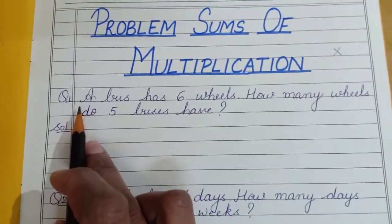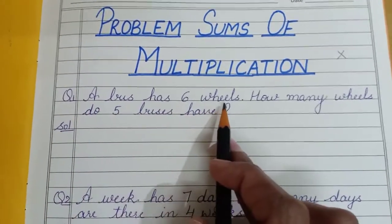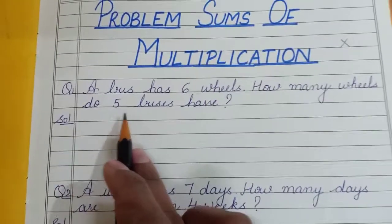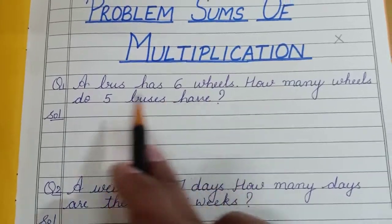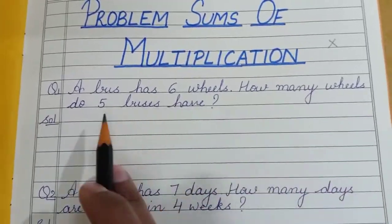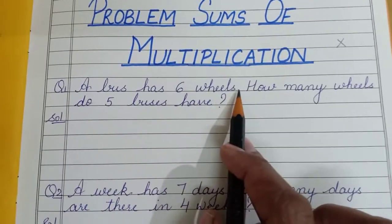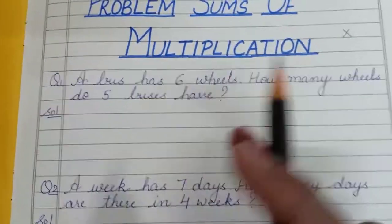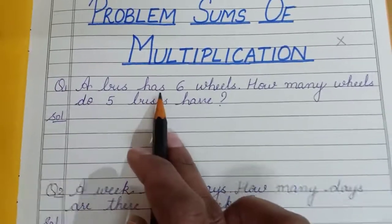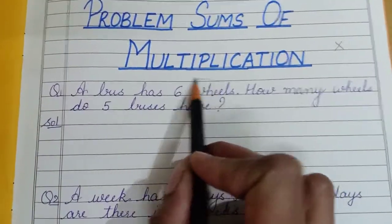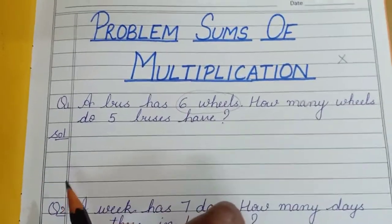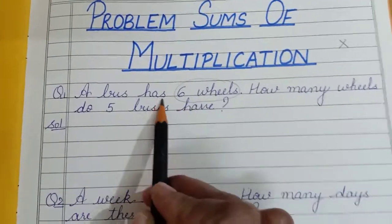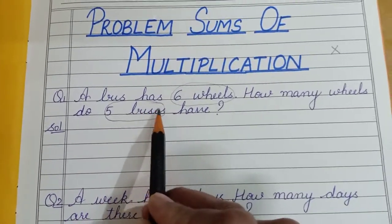Let us read the first question: a bus has six wheels — how many wheels do five buses have? First of all we will read the question completely once, and secondly we will read it sentence by sentence. We will break it, then we will come to know what we have and what we are supposed to find out. A bus has six wheels — you will circle it. Next: how many wheels do five buses have — so five buses, they want to know about five buses.